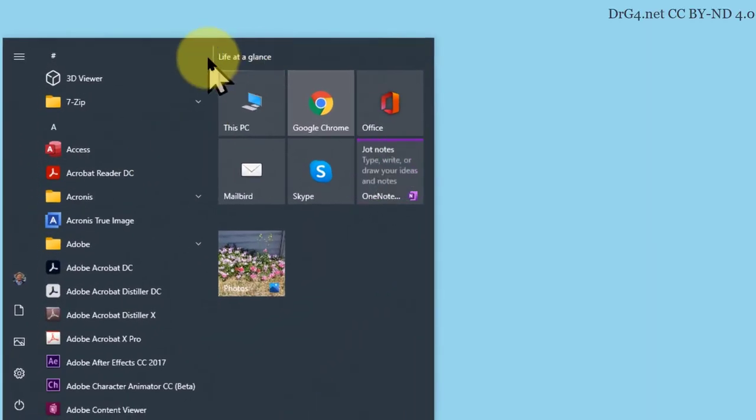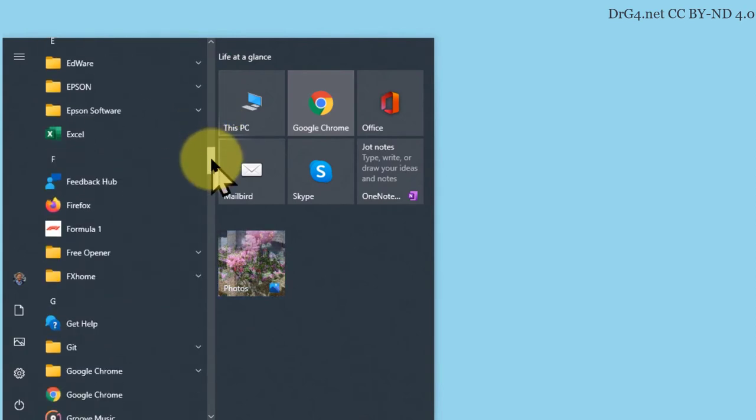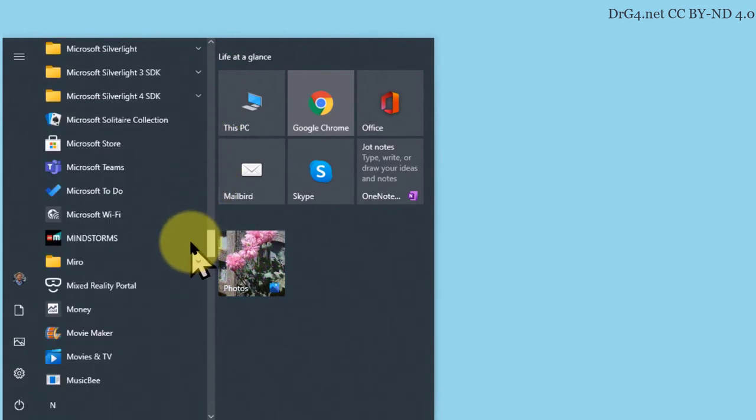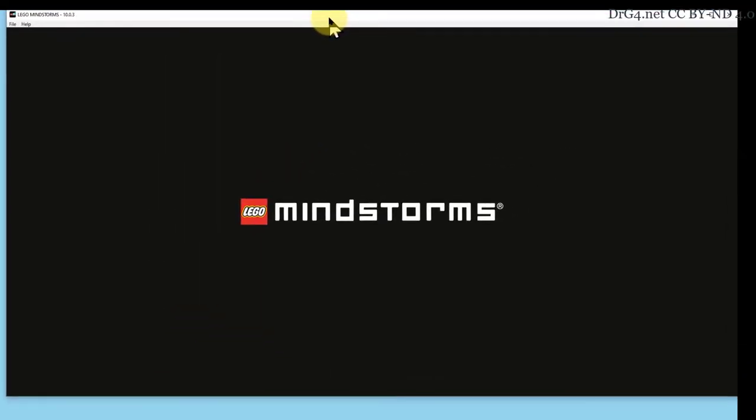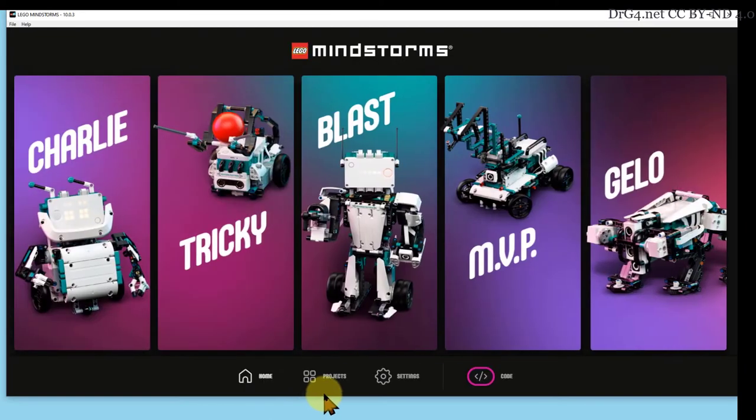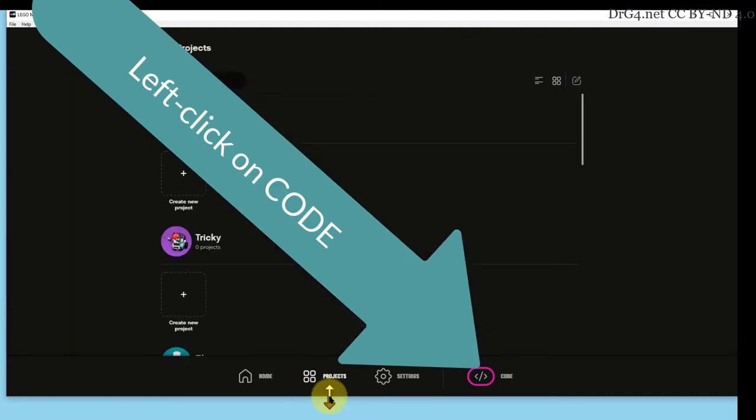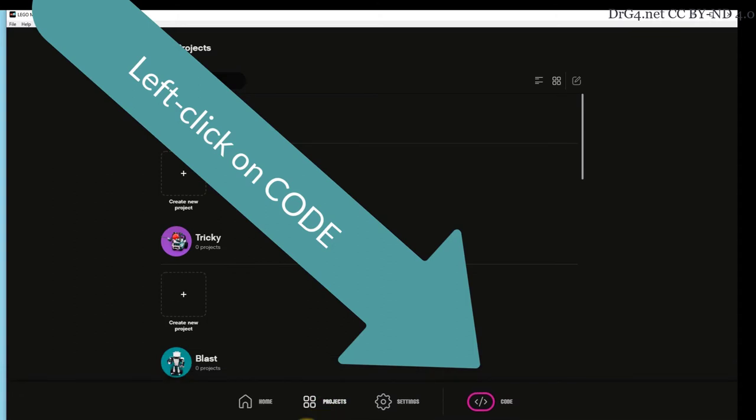Let us start up our Lego 51515 scratch. Get Mindstorms, click on that, and the Mindstorms page will come up. We've got to move it a bit to fit the area we're recording.